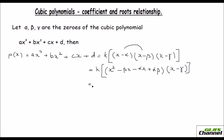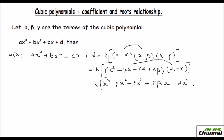In the next step, I am going to multiply these two results together, still keeping k out. What we get is: x cubed minus gamma x squared minus beta x squared plus gamma beta x. Then multiplying by minus alpha x gives: minus alpha x squared plus alpha gamma x. Then multiplying by alpha beta gives: plus alpha beta x minus alpha beta gamma.